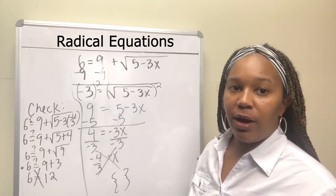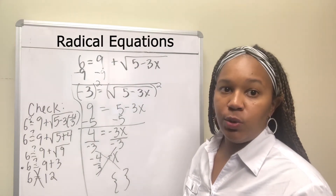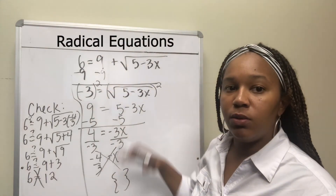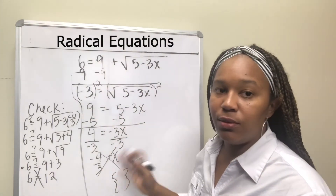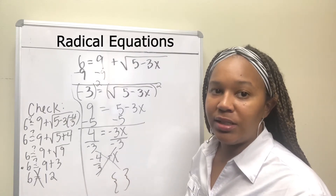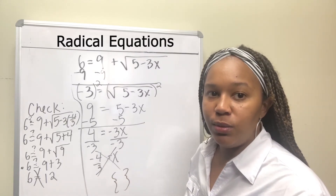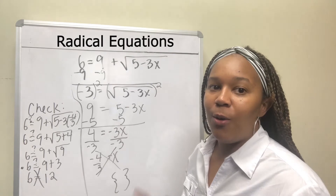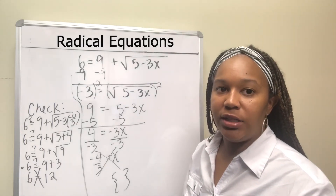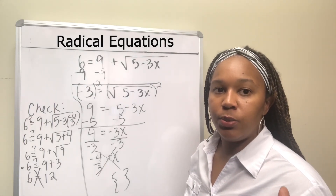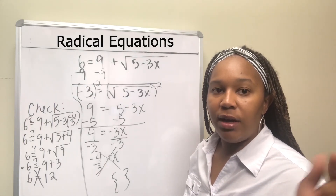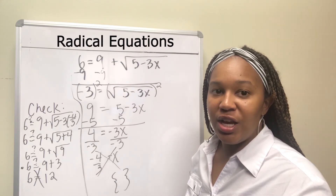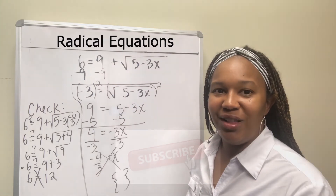To solve a radical equation: isolate the root first, then raise both sides to the power of the root, then solve the resulting equation. And always, always, always go back and check your answer. If you have any questions or comments, make sure you put them below.